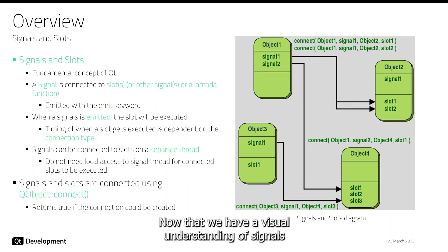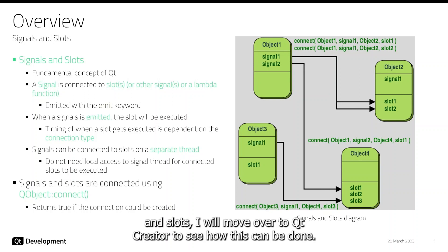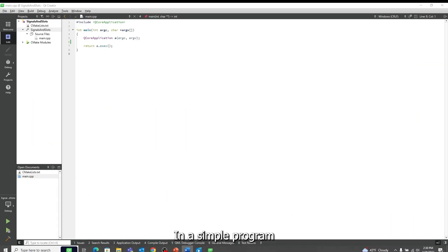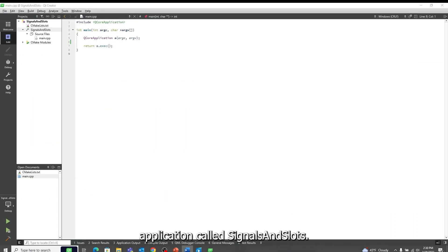Now that we have a visual understanding of signals and slots, I will move over to Qt Creator to see how this can be done in a simple program. Here I have created an empty console application called Signals and Slots.